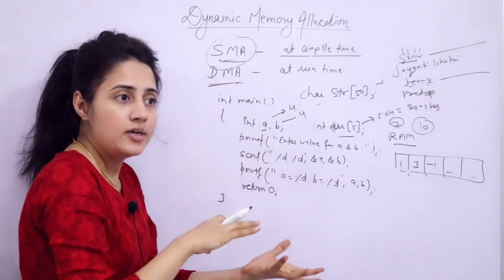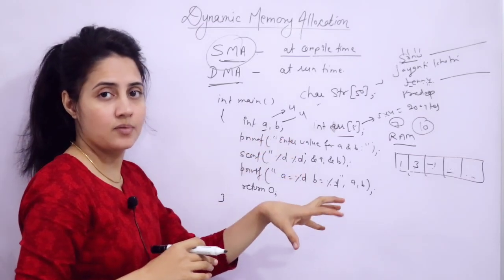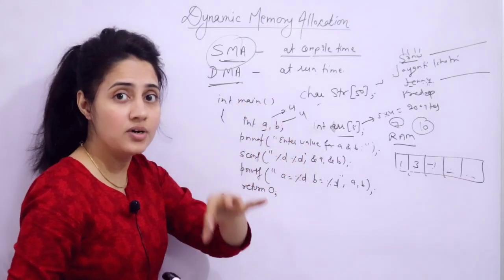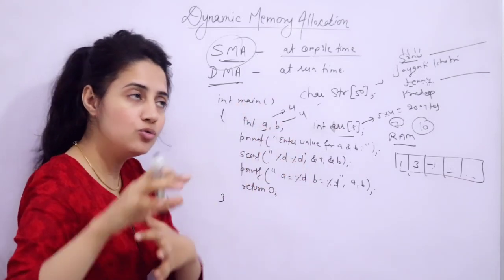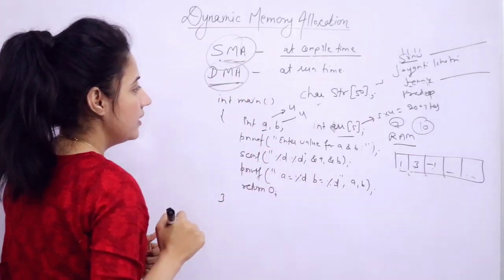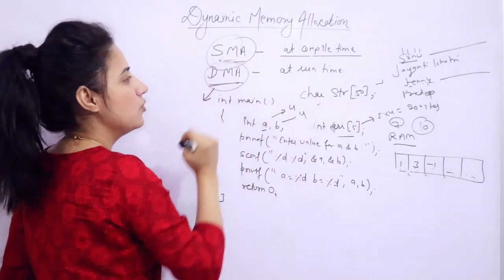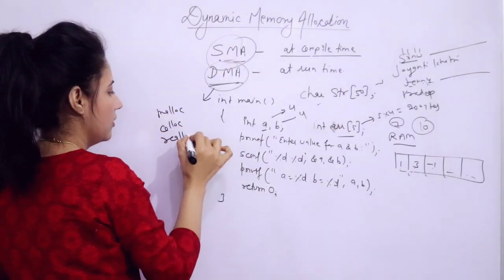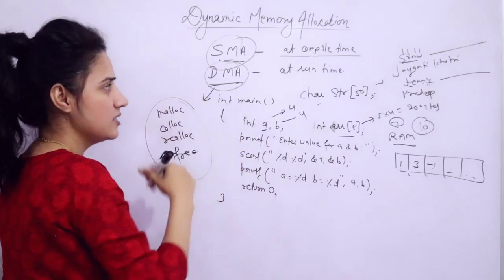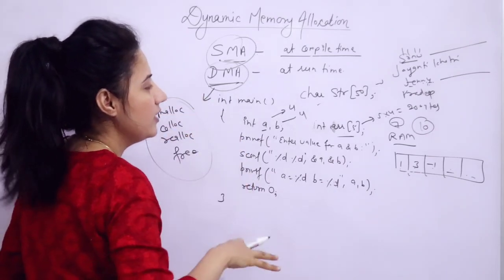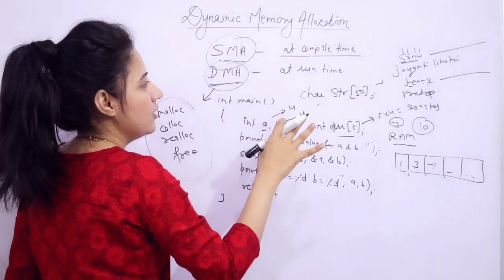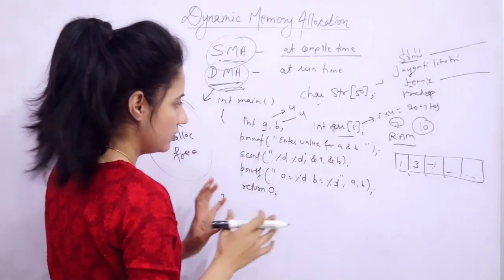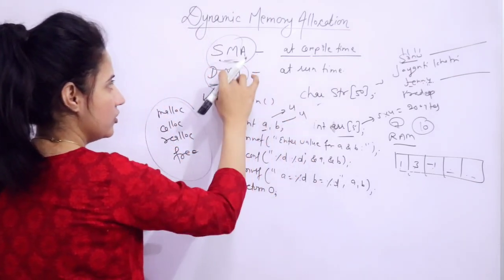In dynamic memory allocation, memory can be allocated and deallocated at runtime according to your programming needs. Memory would be allocated at runtime and can be modified according to your programming needs. How this happens — we have some functions: malloc, calloc, realloc, and free. We will discuss these four functions in detail one by one. Right now, I think the difference between SMA and DMA is becoming clear, but let me discuss some more points about DMA.